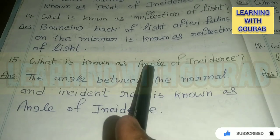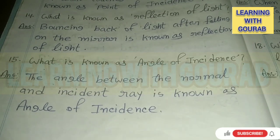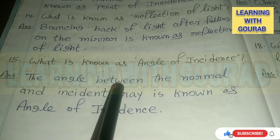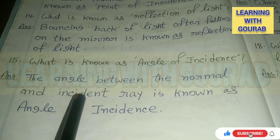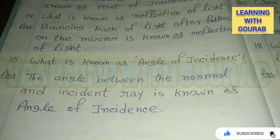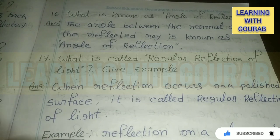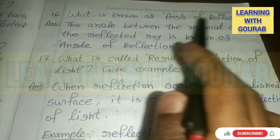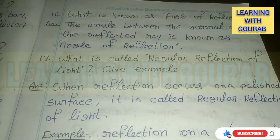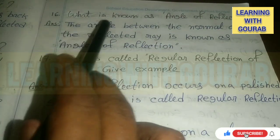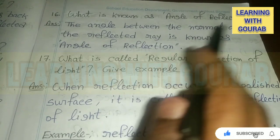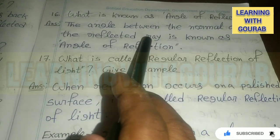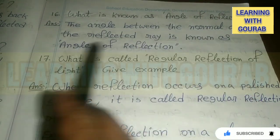Next question: What is known as angle of incidence? Next question: What is known as angle of reflection? Answer: The angle between the normal and the reflected ray is known as the angle of reflection.